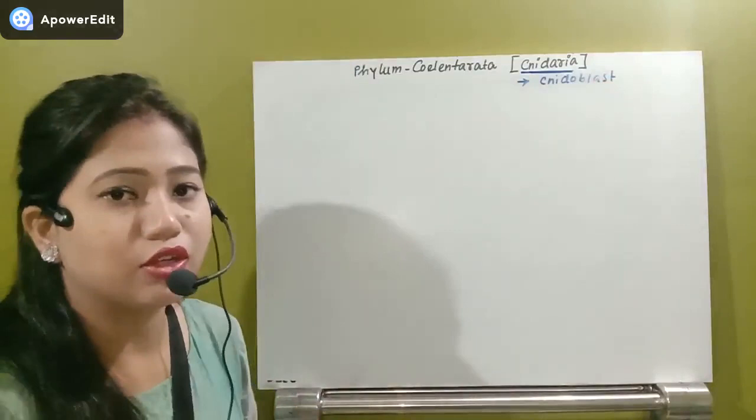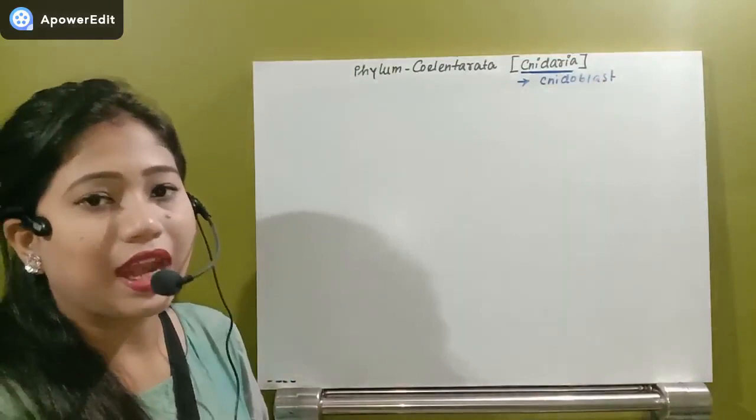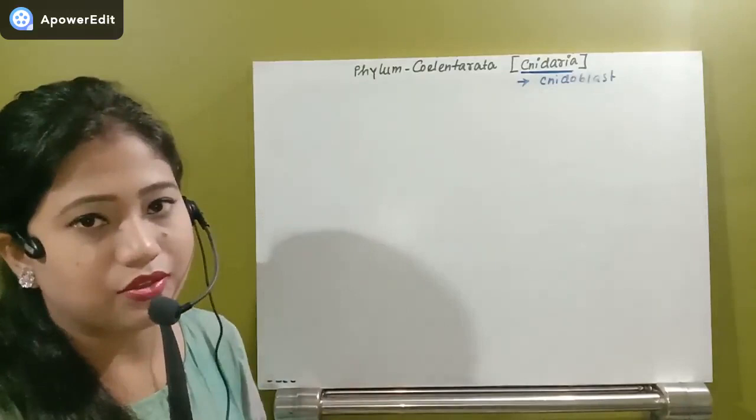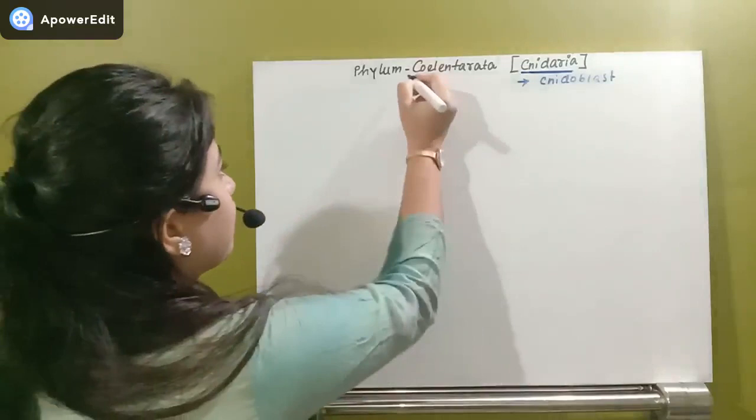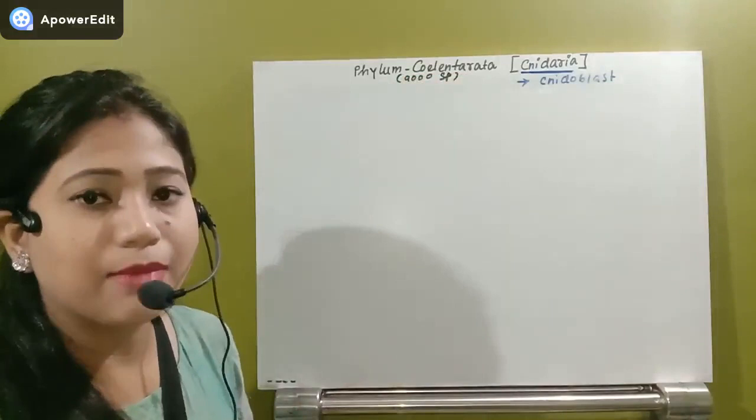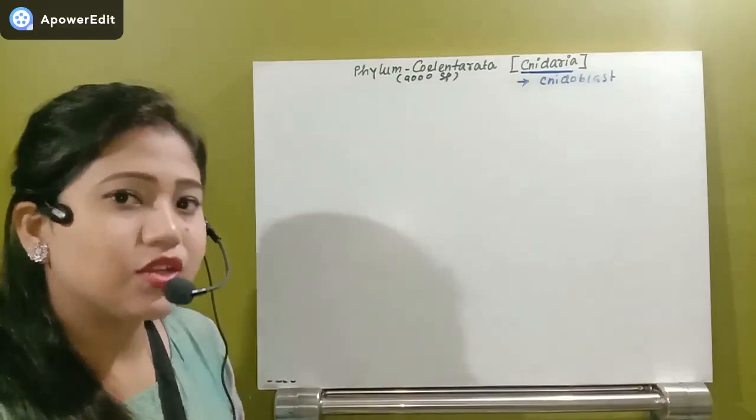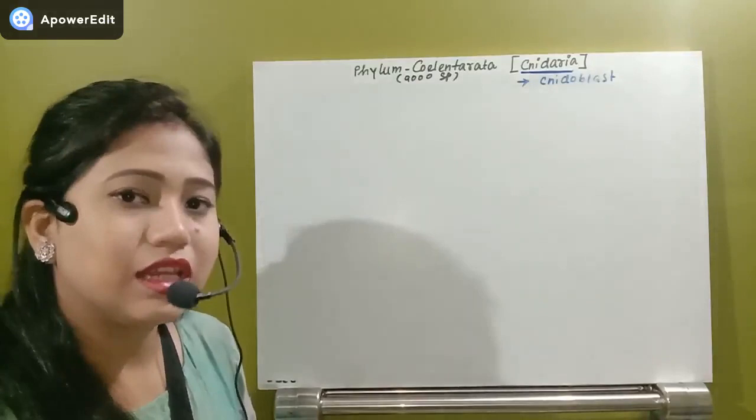We will see in detail how the cnidoblast works and its function later on. First, let us see the general characteristics and basis of classification in Phylum Coelenterata. In this phylum, around 9,000 species have been discovered so far.